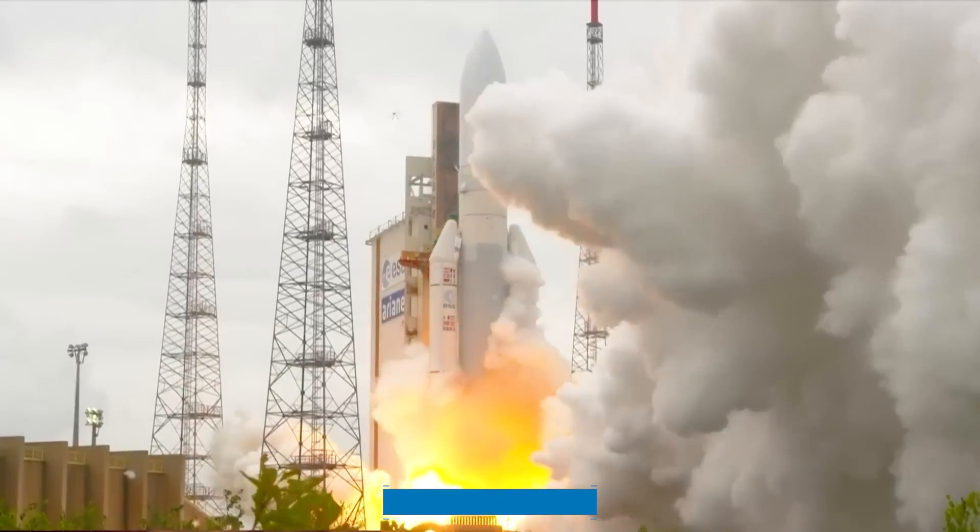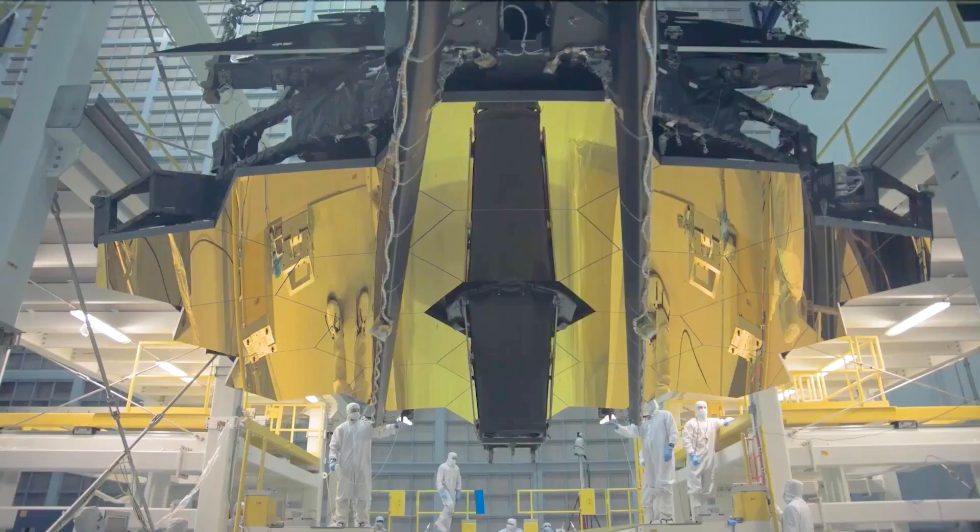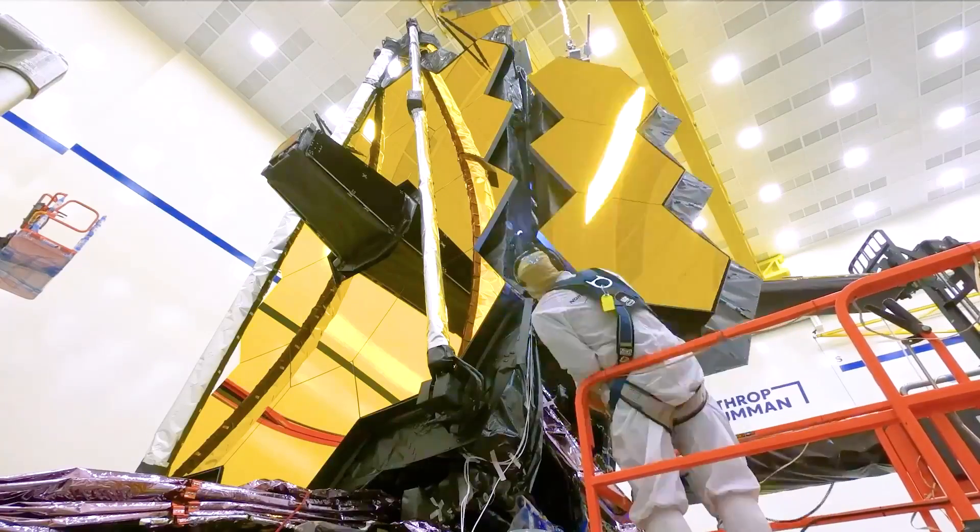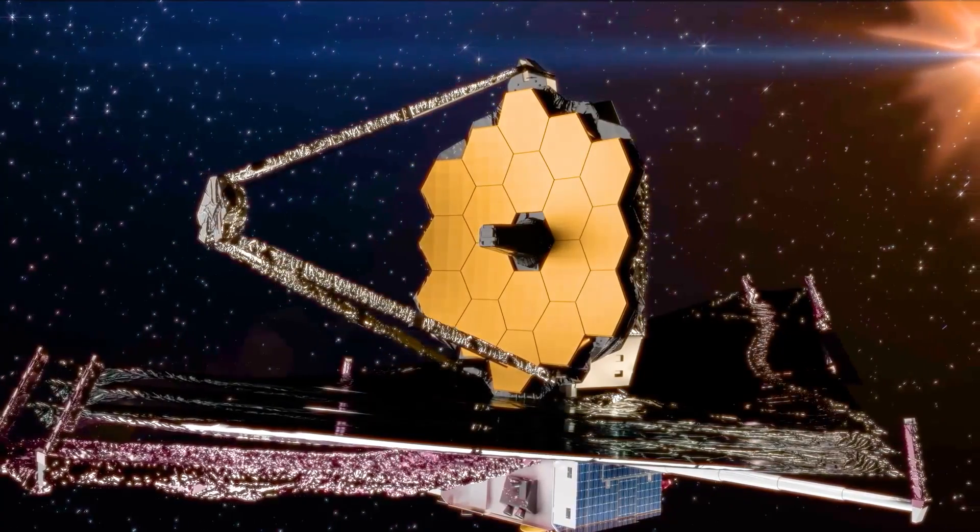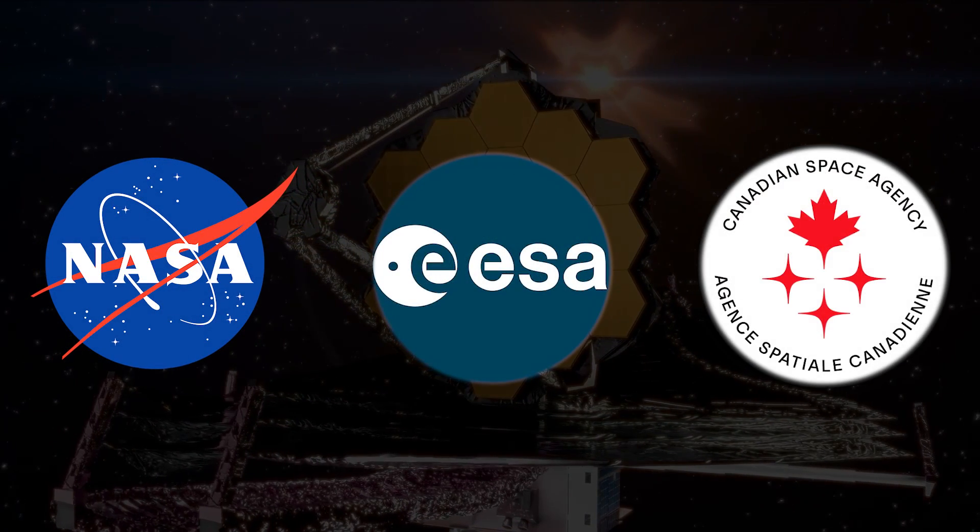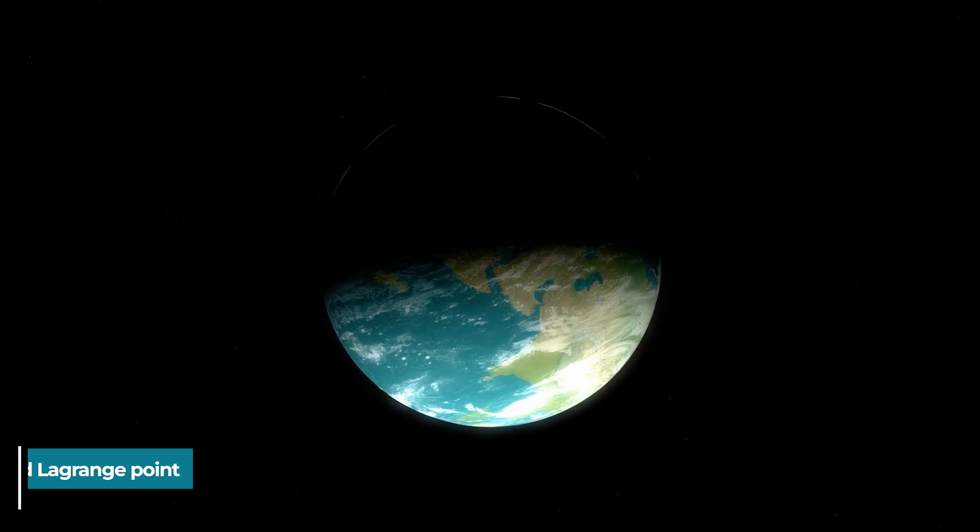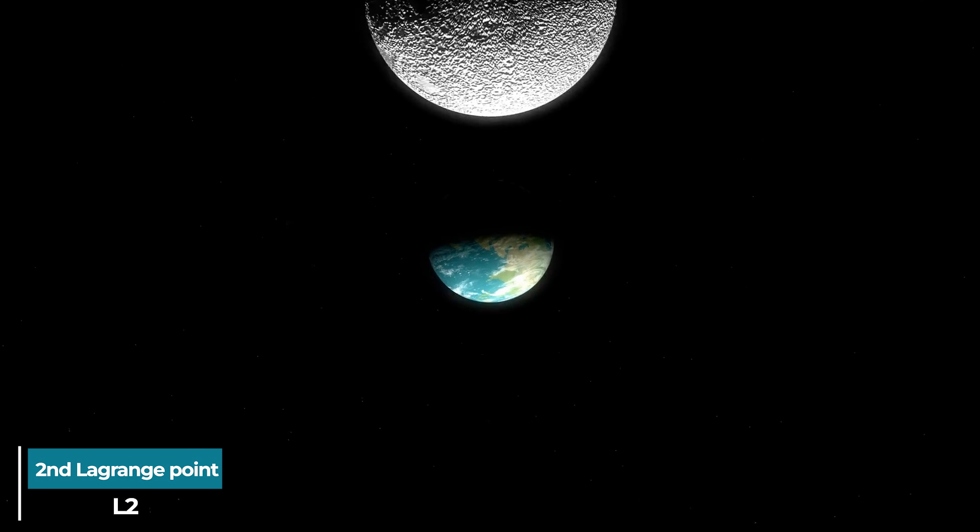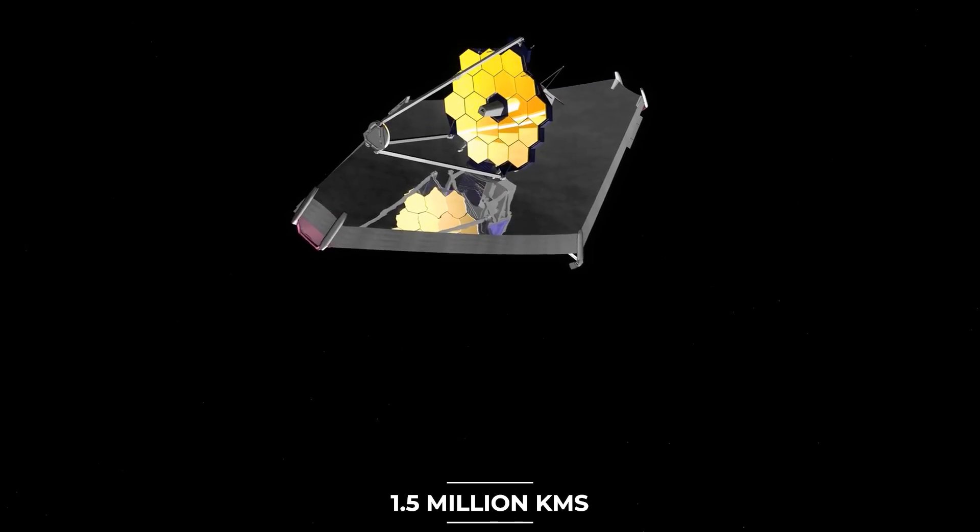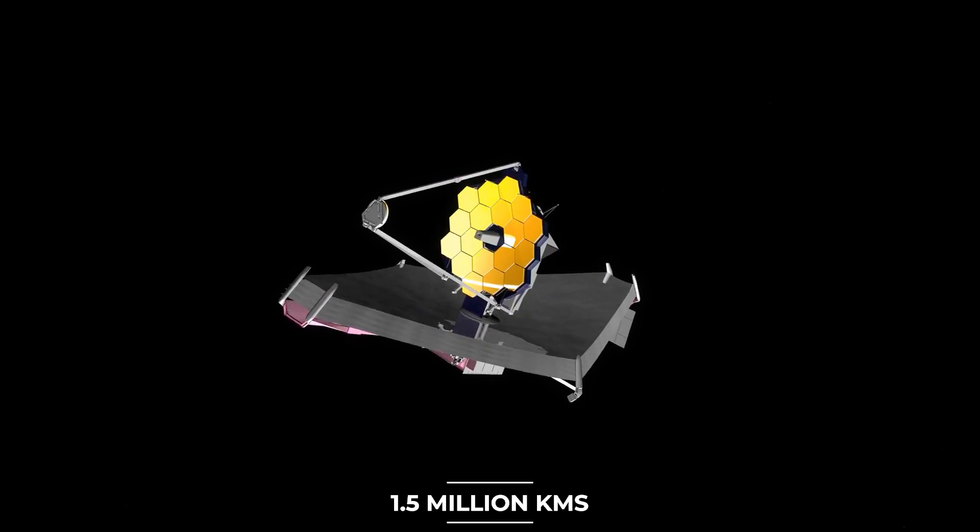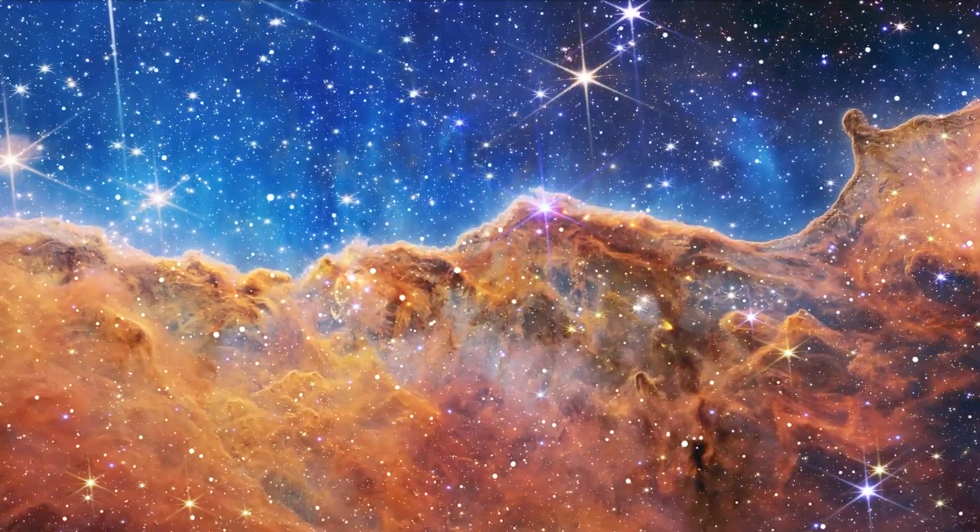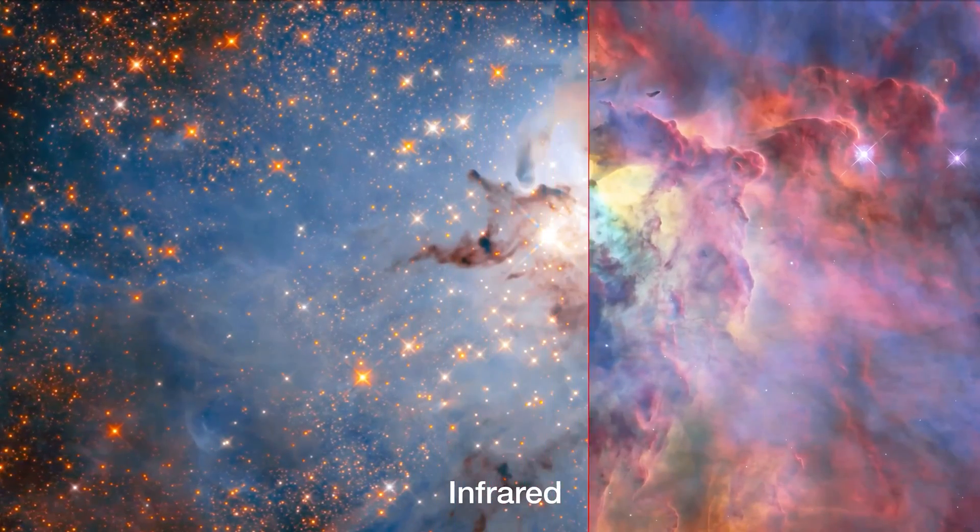Launched in December 2021, the James Webb Space Telescope is the most advanced space telescope ever constructed, developed as a collaborative effort between NASA, the European Space Agency, and the Canadian Space Agency. Positioned at the second Lagrange point, about 1.5 million kilometers from Earth, the James Webb Telescope is equipped with cutting-edge instruments designed to capture high-resolution images and spectra in the infrared range.